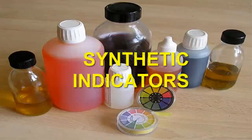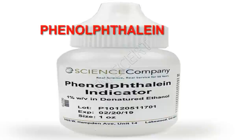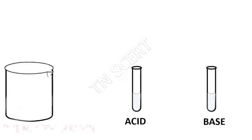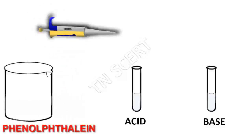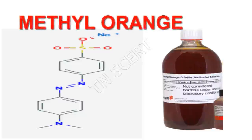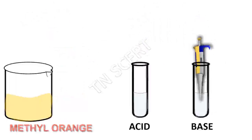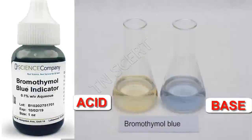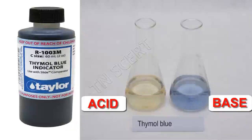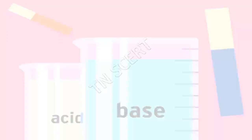Synthetic indicators are prepared from artificial substances. For example, phenolphthalein is a chemical compound with the formula C₂₀H₁₄O₄. It is colorless in acid but turns pink in basic solution. Methyl orange shows red color in acidic medium and yellow color in basic medium. Bromothymol blue, phenol red, thymol blue, and alizarin yellow are some other widely used indicators.